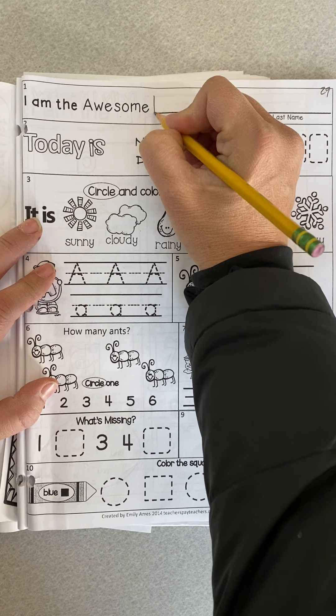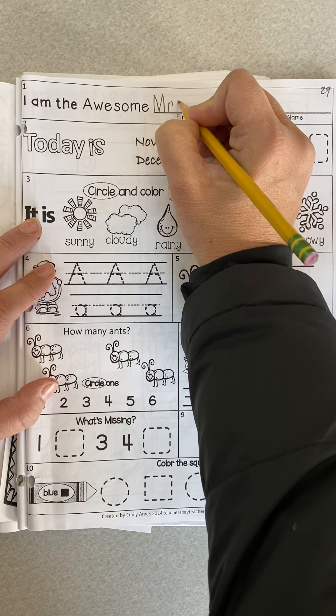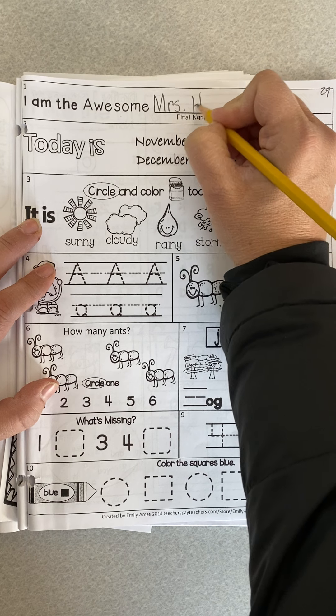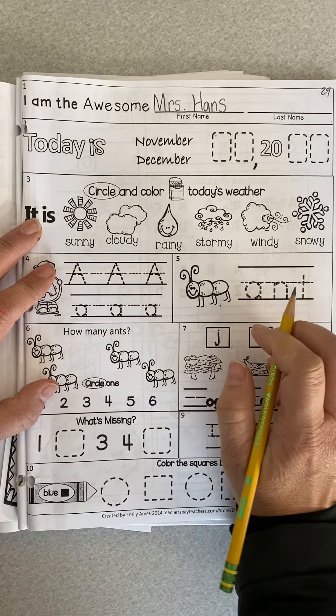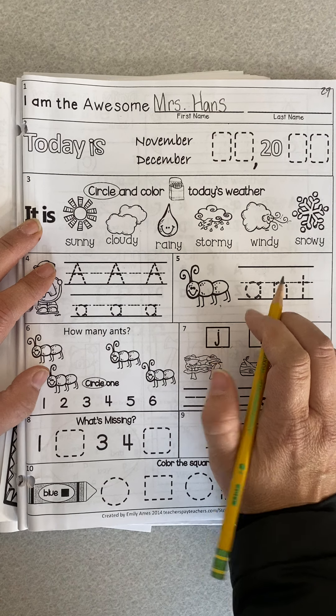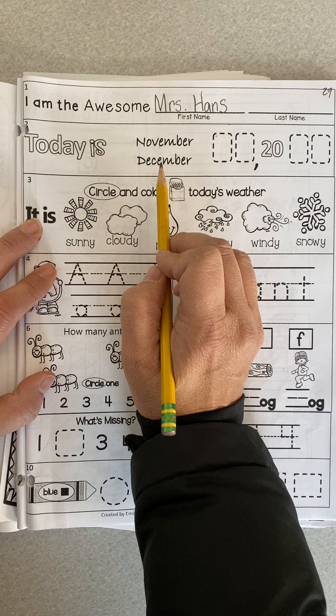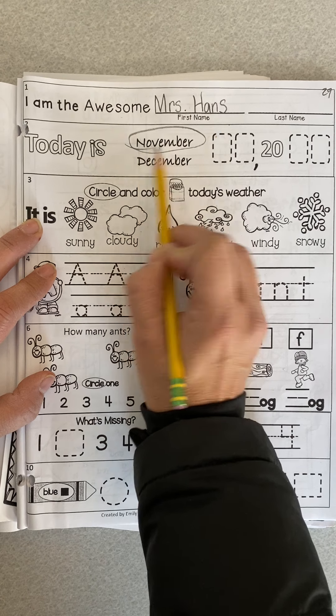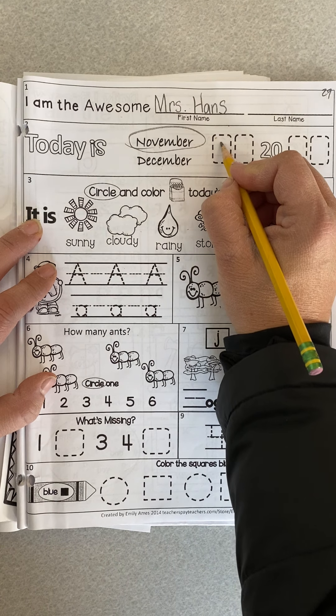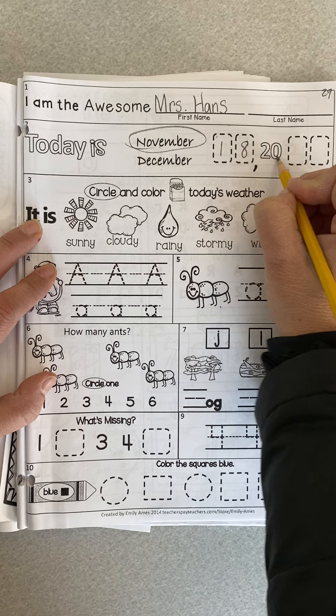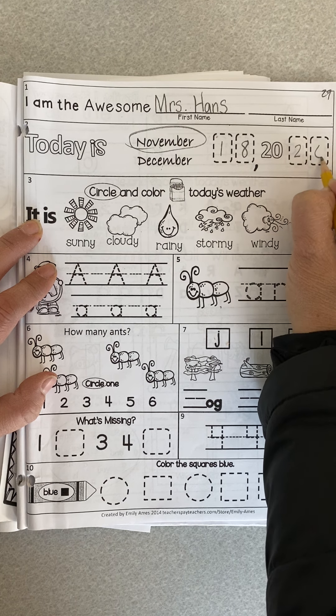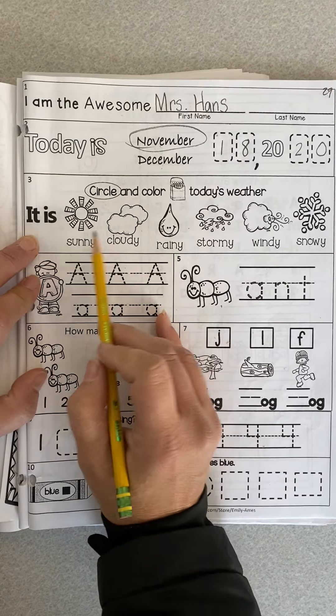We're going to write our name first because that's always the first thing that we do. Capital at the beginning, lowercase letters next. Do not start any of your letters on the bottom. It says today is, November or December? Still November. And I said already it is the 18th, so we write a 1 and an 8. Two thousand 20. You're going to fill in the rest by yourself.